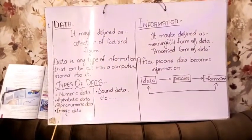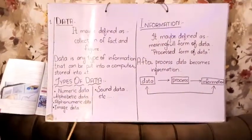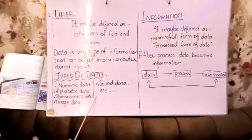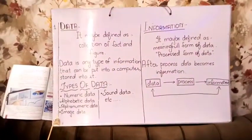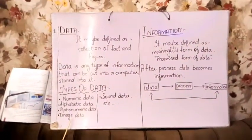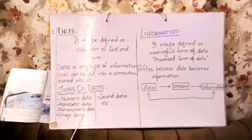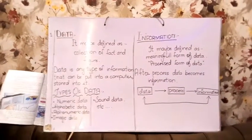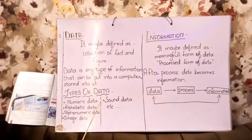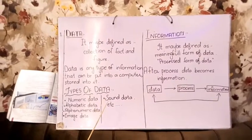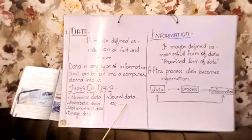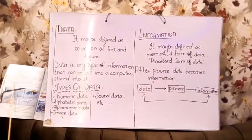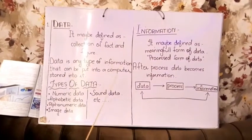Alphanumeric data includes both alphabets and numbers. Image data is when you enter your pictures into the computer. Sound data — sound is also a type of data, and so on.